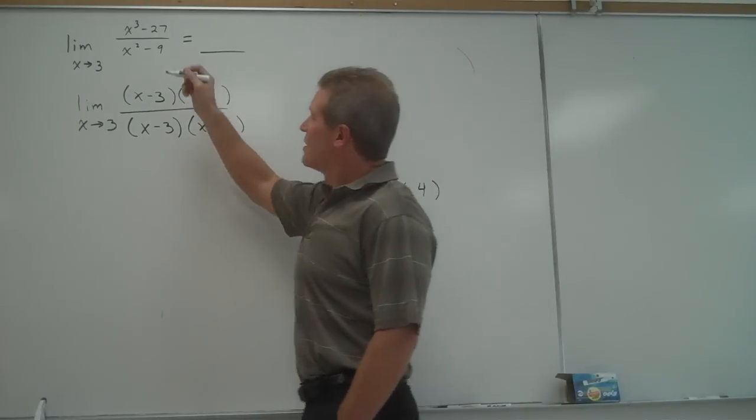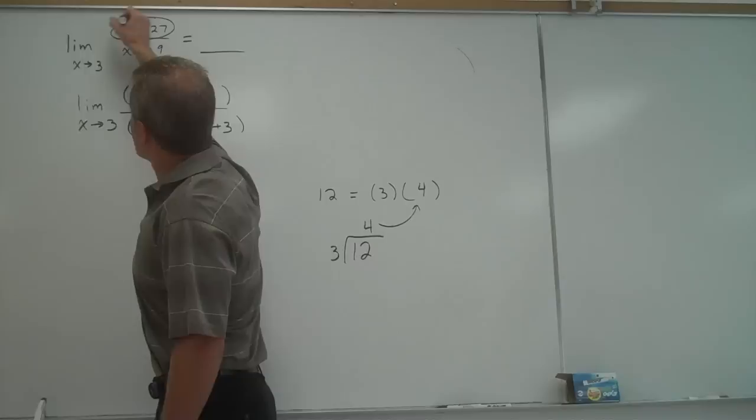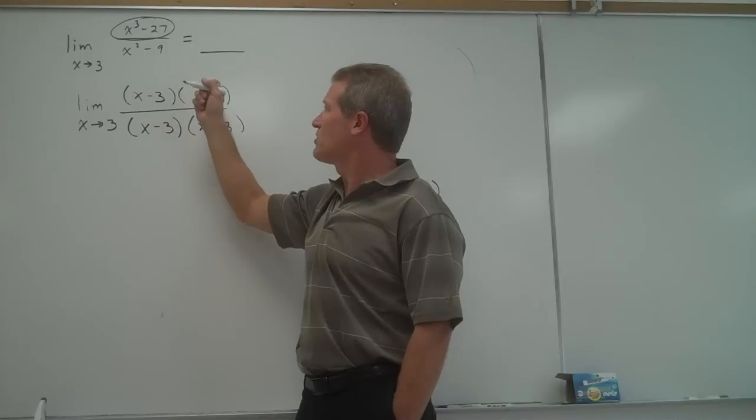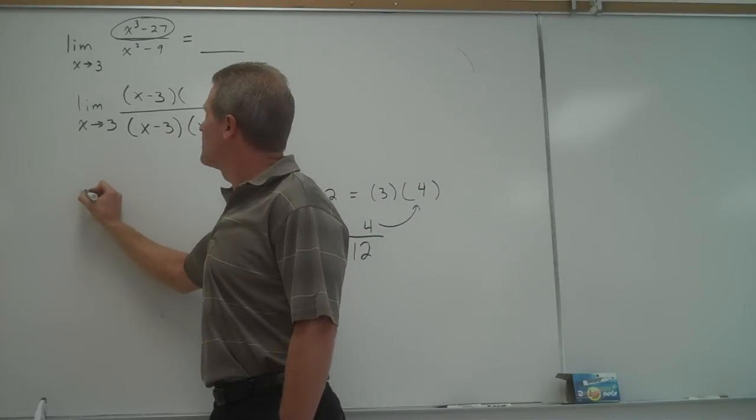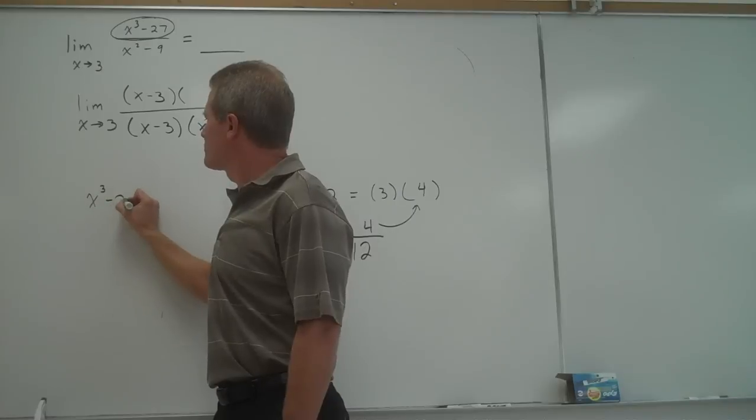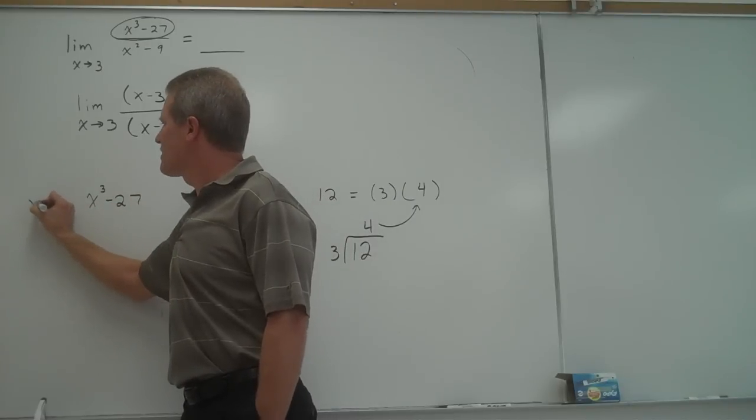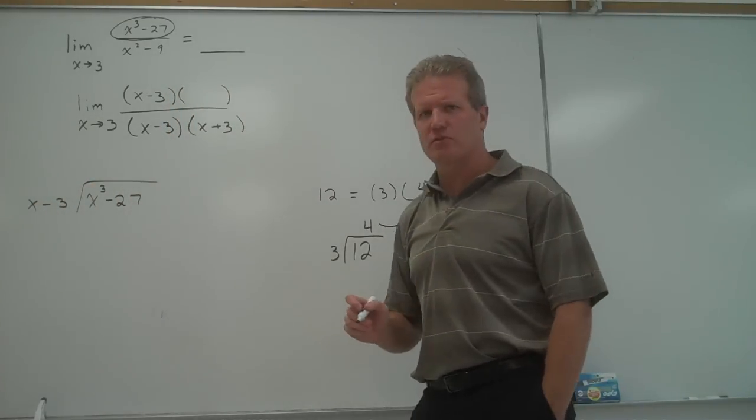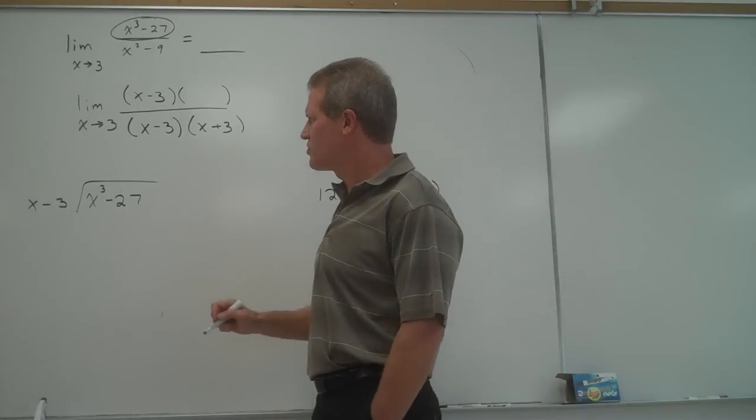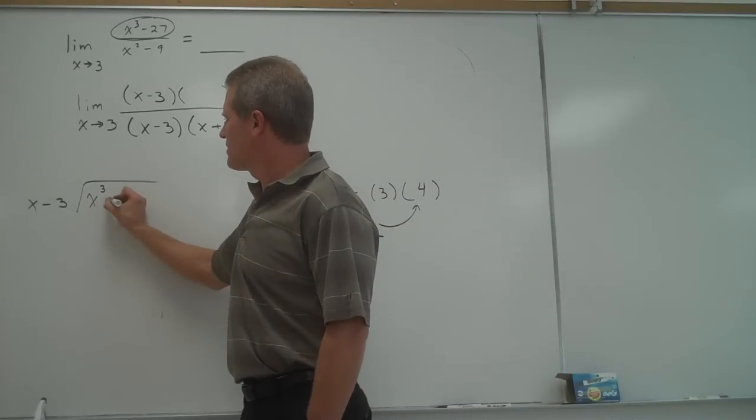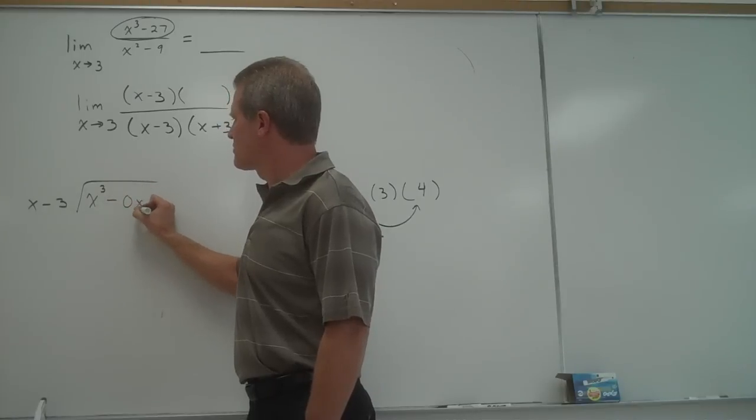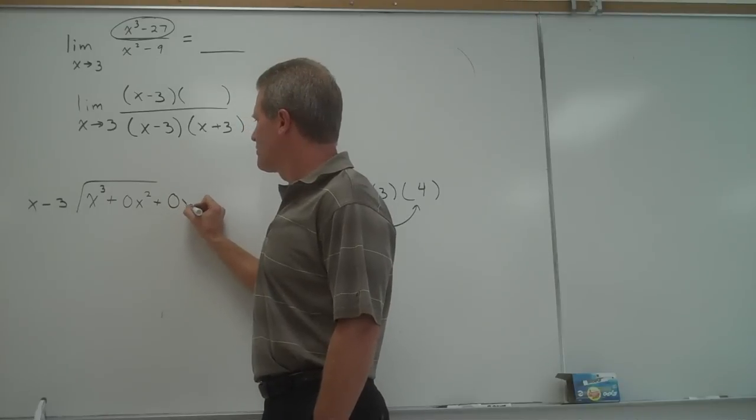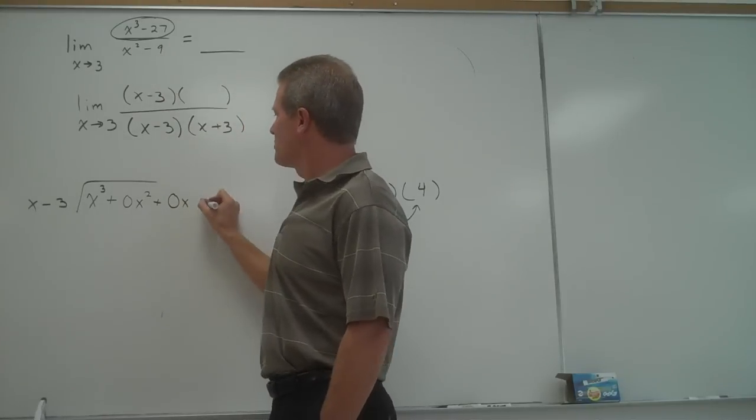In this case, I'm going to take x cubed minus 27 divided by x minus 3. That will give us this other factor. Now, there is a way to do this with long division. We'd have to write this as minus 0x squared plus 0x to the first, and then minus 27.